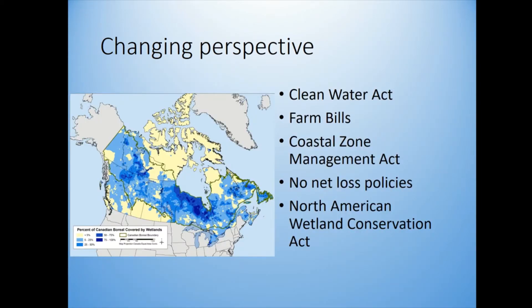A variety of laws came about — the Clean Water Act in the 70s and farm bills, which we usually think of as helping farmers, but a lot of farm laws also try to protect wetlands while giving farmers benefits in other areas. Generally the US and Canada operate under a no-net-loss policy, but we're still paving over and getting rid of natural wetlands to create artificial wetlands elsewhere, which don't have nearly the same ecosystem services as natural wetlands.